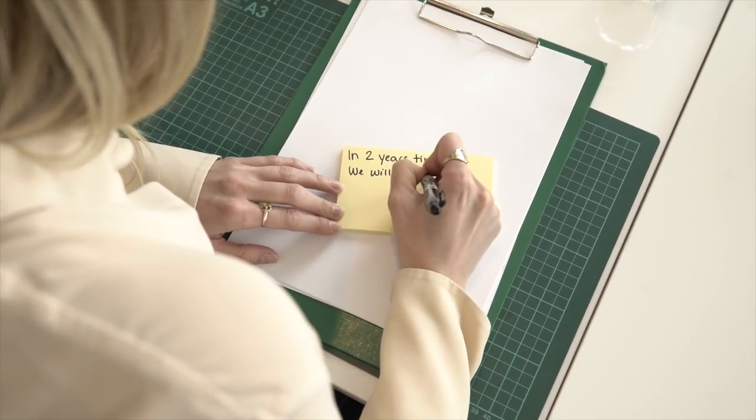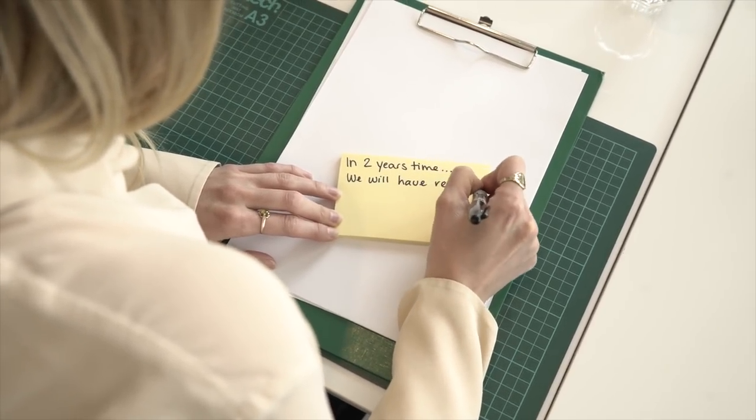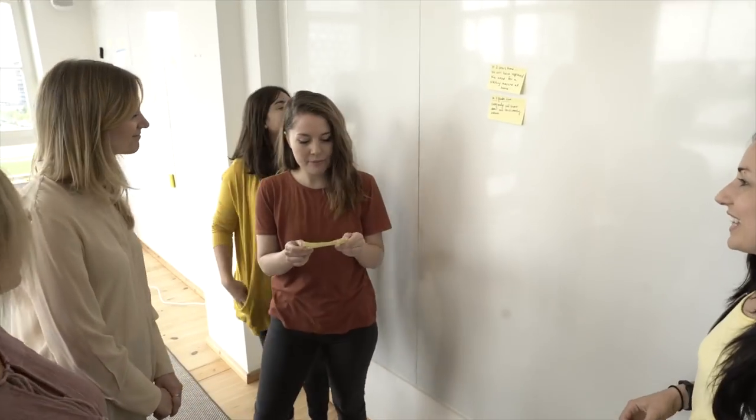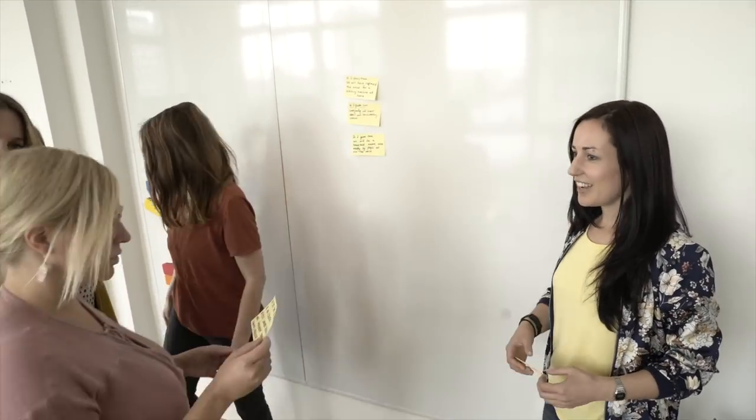Try to get everybody to stick to writing down just one goal — unless they really want to do two, that's also fine. At the end of that exercise, get everyone to put their post-it on the wall. One by one, get each team member to read aloud what their goal is, so everyone has a good sense of what the team is thinking for this two-year goal.